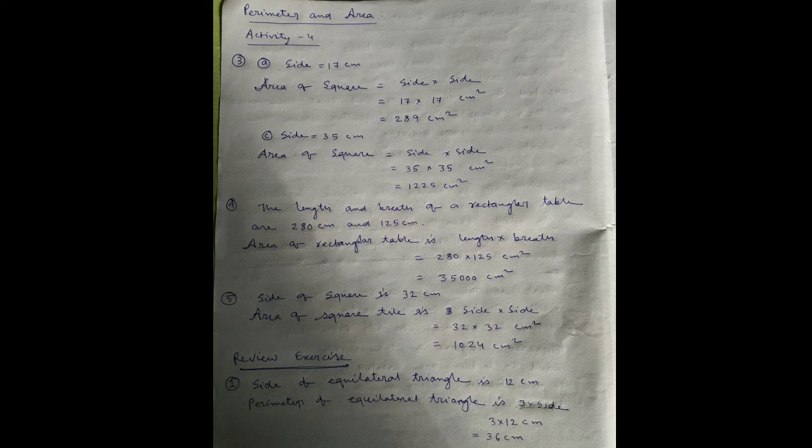Third side equal to 56 minus 32, equal to 24. So third side is 24 centimeter. Number four: perimeter of a square tile is 128 centimeter. Perimeter means 4 into side, equal to 128 divided by 4 centimeter.